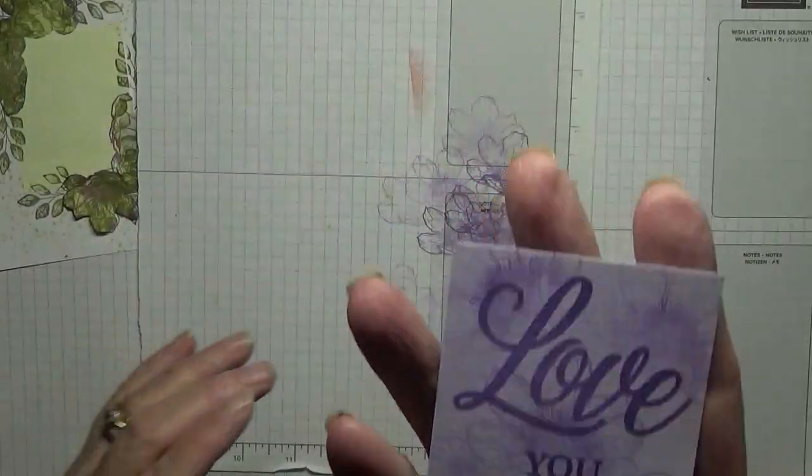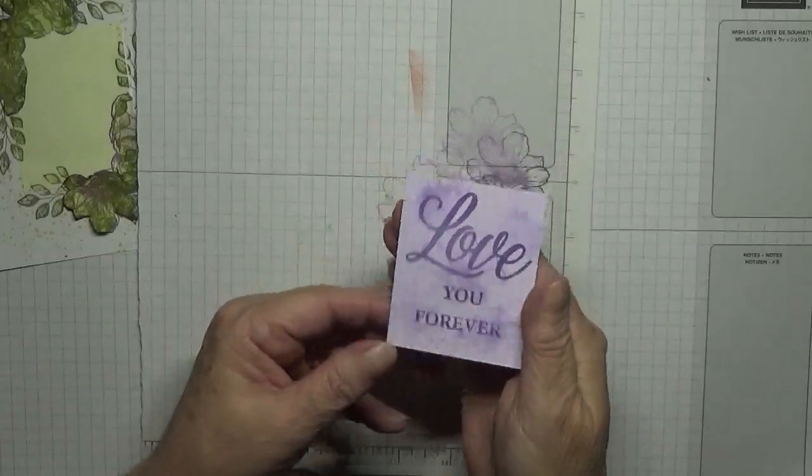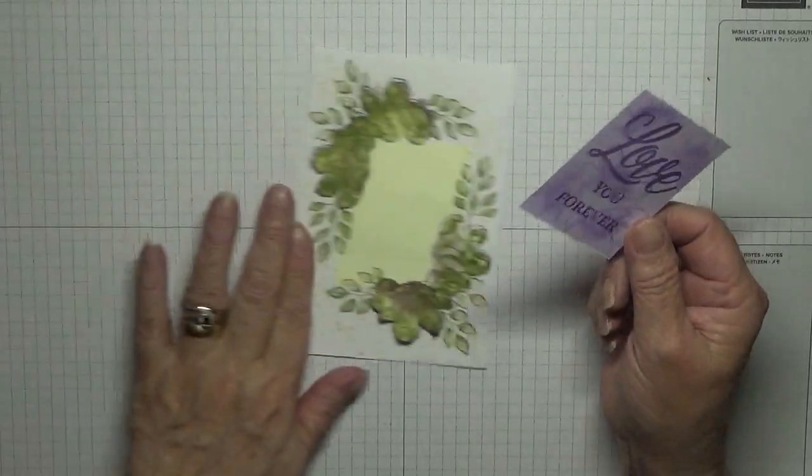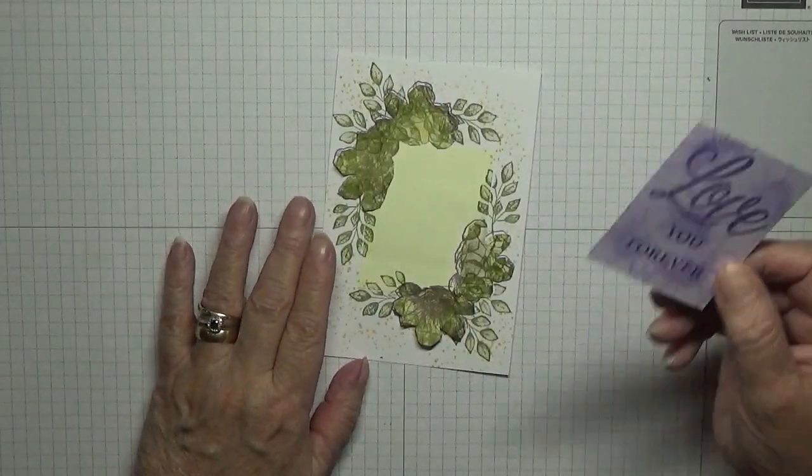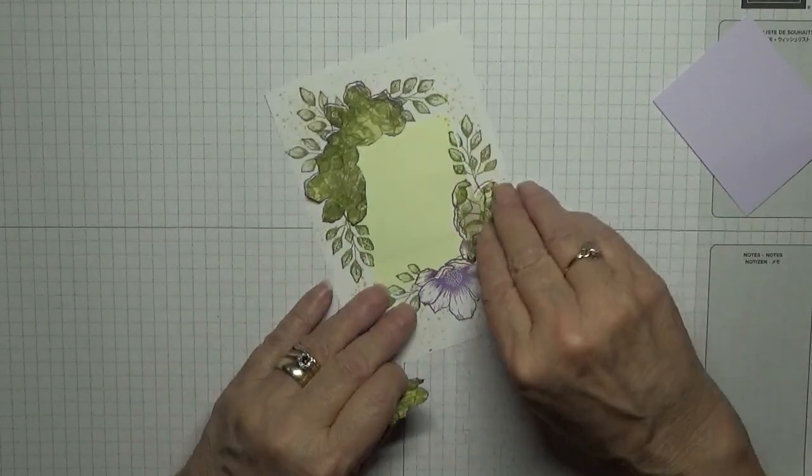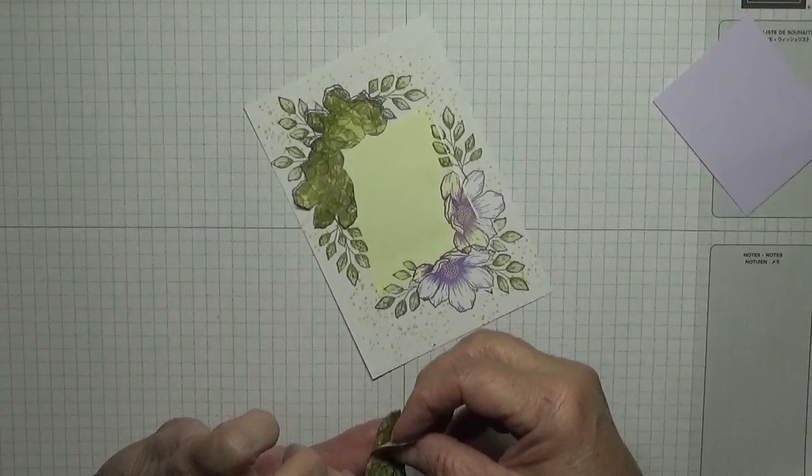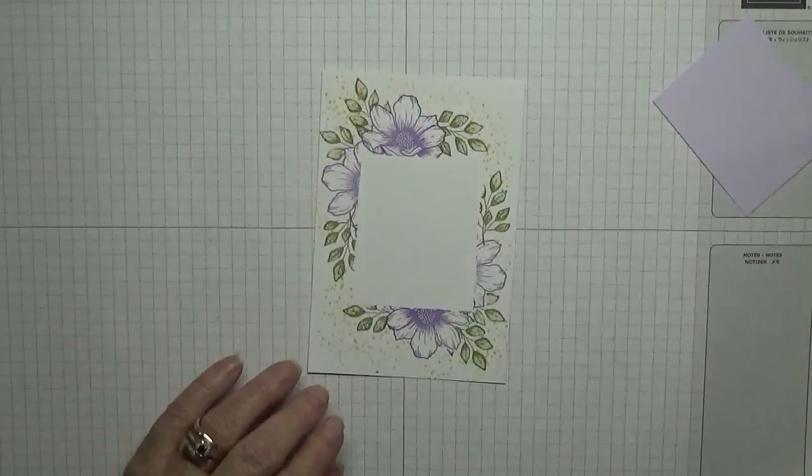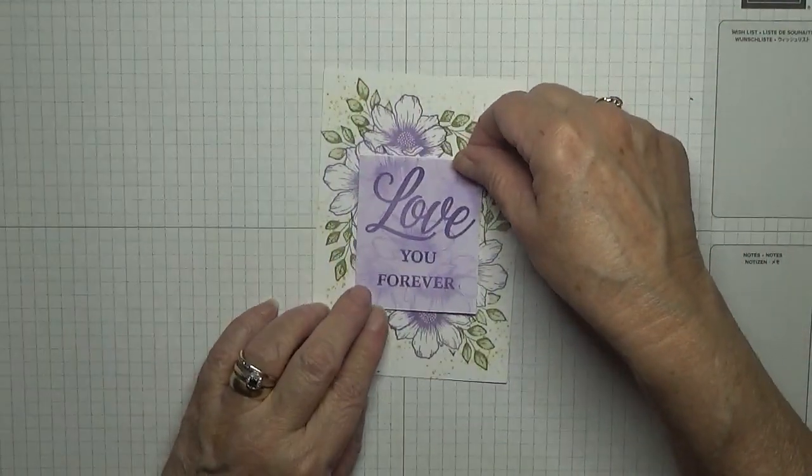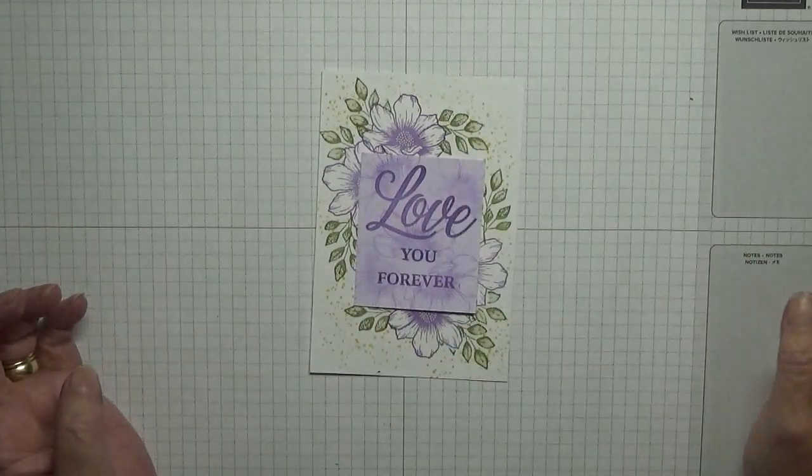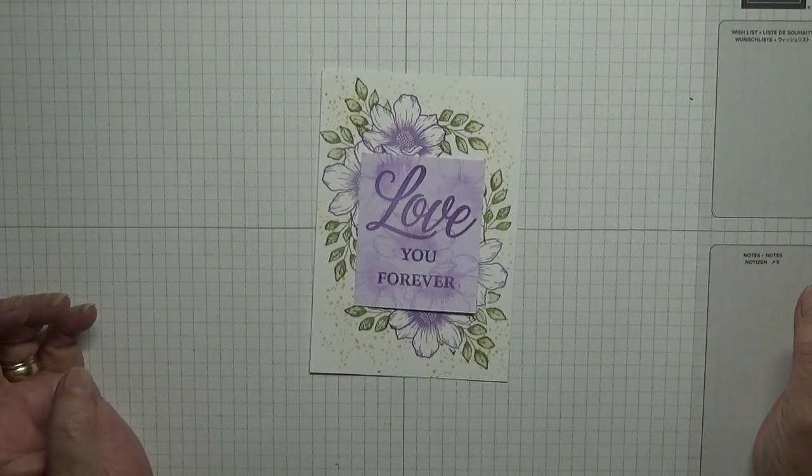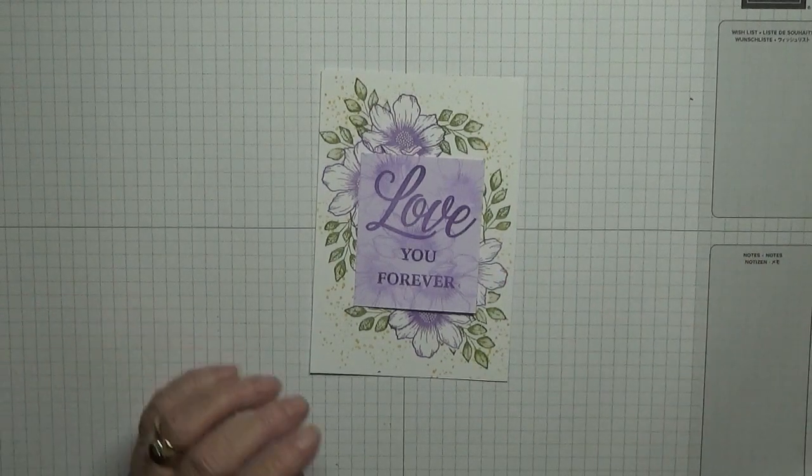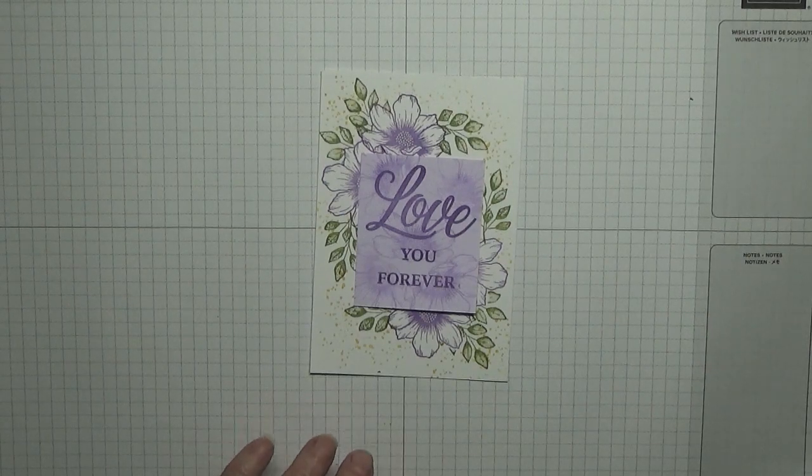Looks quite nice, doesn't it. We're just stamping on the background, just takes away the plainness. And that will sit on there on dimensionals. So let's move all the coverings. And then that will sit obviously there. Doesn't that look nice. I could have stamped that one up a little bit more, but never mind.